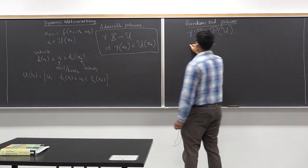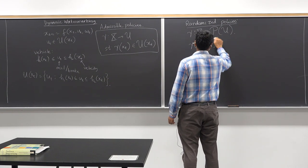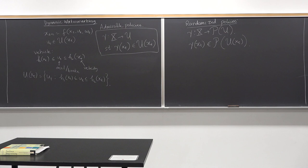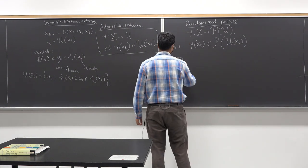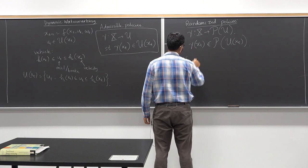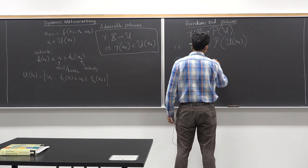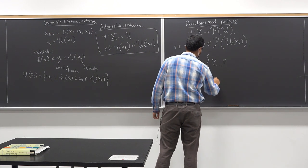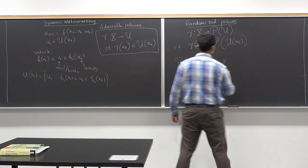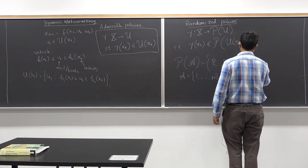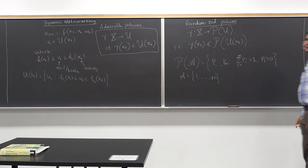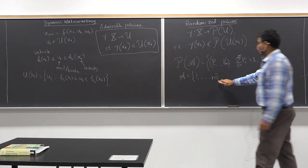So γ(X) maps to a probability measure over U(X). If the action set A = {1, ..., m}, then γ(X) = (p_1, ..., p_m) such that the sum of p_i equals 1 and each p_i ≥ 0. This is the set of probability measures over the set A.